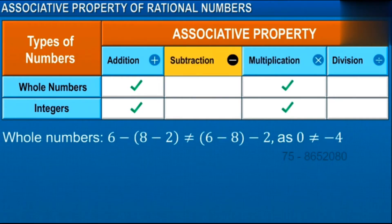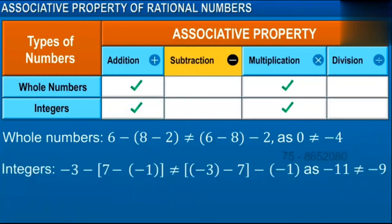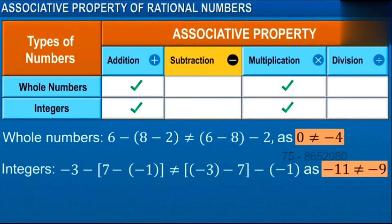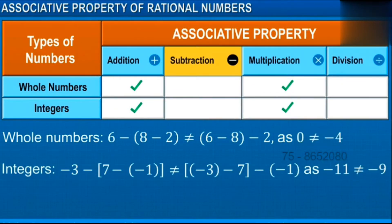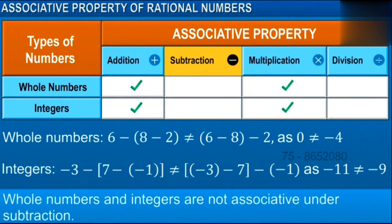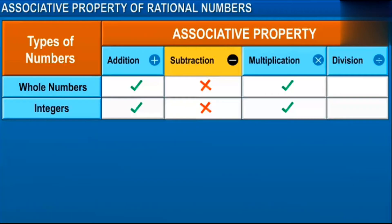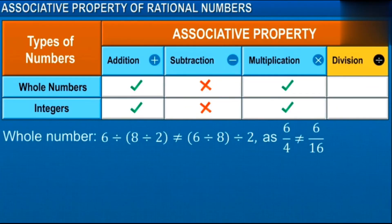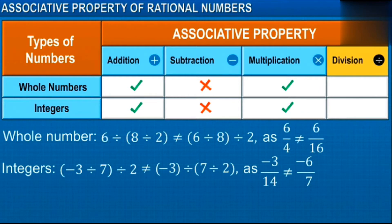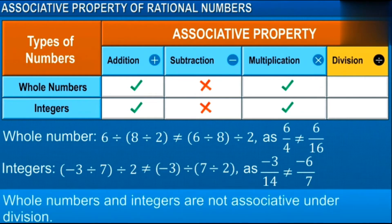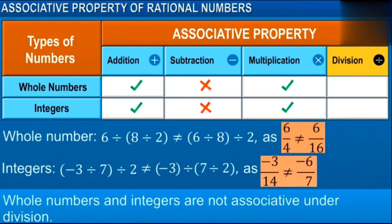Observe this. On changing the order of whole numbers and integers under subtraction, the answer changes. Thus, whole numbers and integers are not associative under subtraction. Similarly, they are not associative under division.